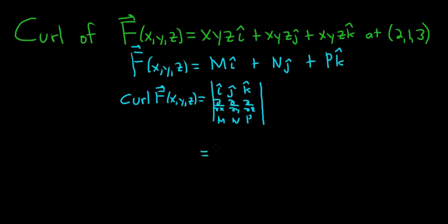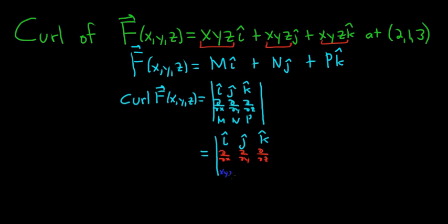So in this case we have i, j, k and we still have ∂/∂x, ∂/∂y, ∂/∂z in the second row. M, N, and P are all exactly the same in this problem — they're all xyz. So the third row is just x, y, z; x, y, z; x, y, z.